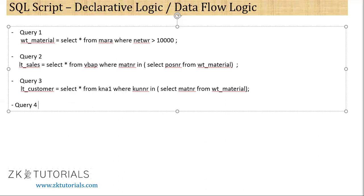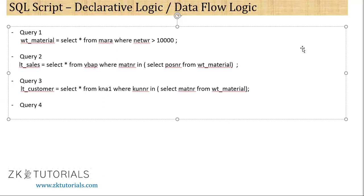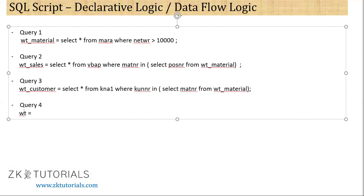Query number 4. We have query number 4 and this will give us the sum of gross amount. The query we define is: LV_WT_TOTAL equals to select sum of network from WT material. So there we are having all the networks. So these are my four select queries.